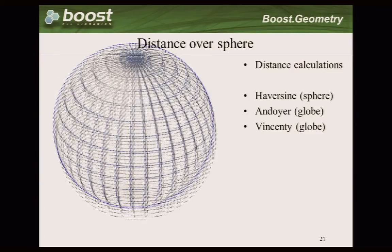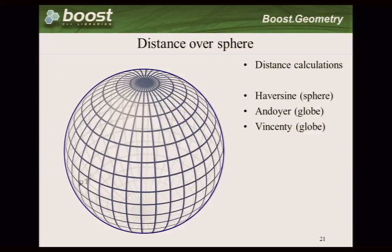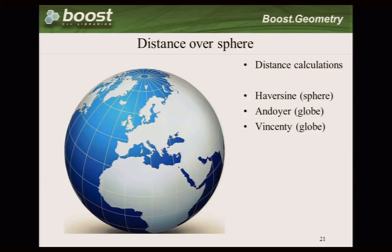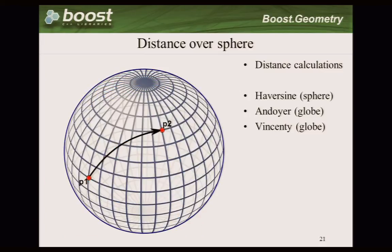The generic distance function can also calculate the distance between a point and a polygon - the shorter distance. Besides the Cartesian distance, we can also calculate the distance over a sphere. As you probably know, the distance on a sphere is the shortest but not a straight line - it's a great circle, a curved line. We can calculate the distance over that or over the globe because the globe is not really a sphere but a spheroid.